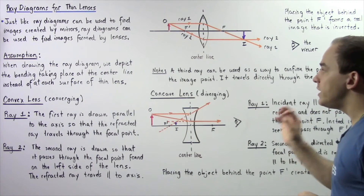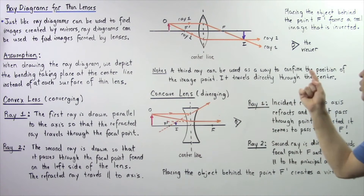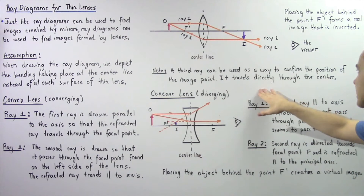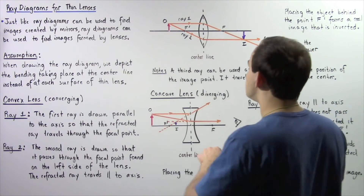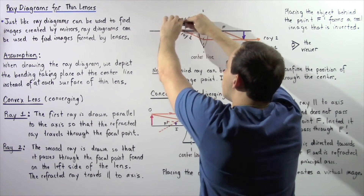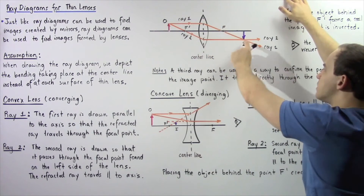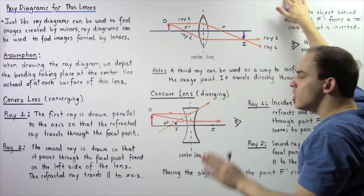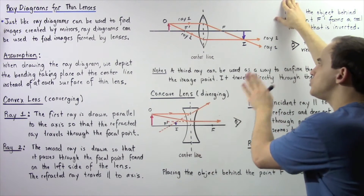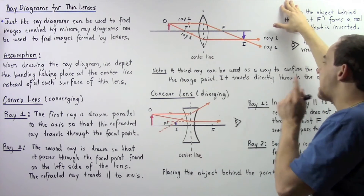If we wanted to, we can also draw a third ray as a way to confirm or check the position of our image. It travels directly through the center, beginning at the object point, and continues straight through. It will pass through the same exact image point. Usually we only draw ray number one and ray number two — these two rays give us the position of our image — and the third ray can be used to verify that position.